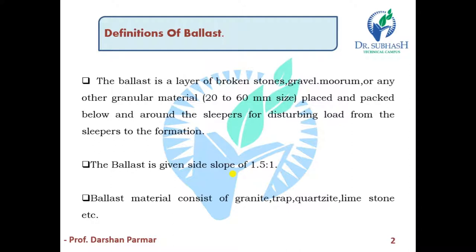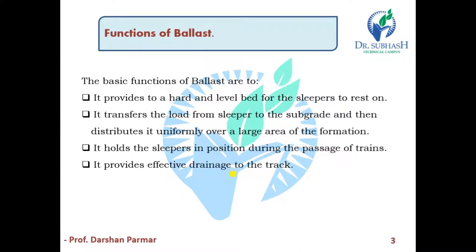The ballast is 20–60 mm in size and is packed below and around the sleepers. The load is distributed from the sleepers to the formation. Now, what is the function of ballast?